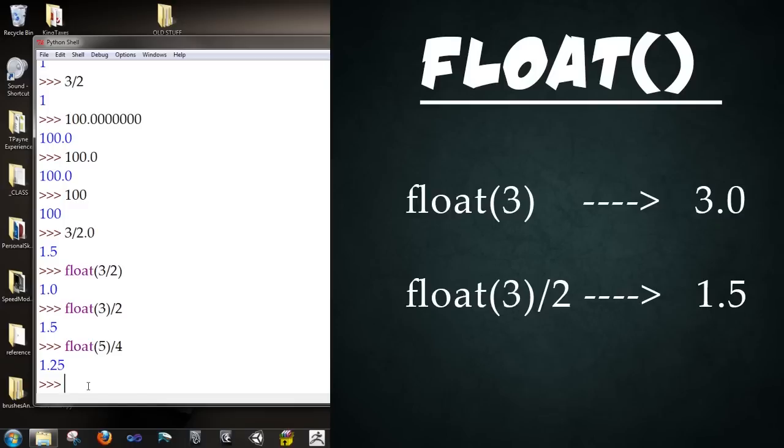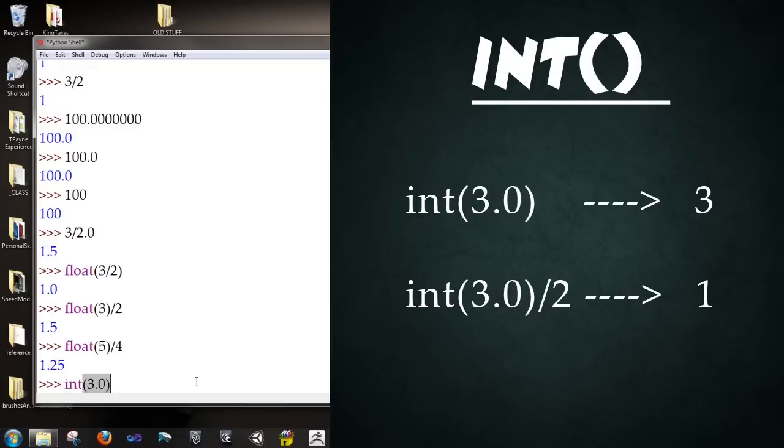The same can be done in the reverse. So we typed in float open close parentheses to convert an integer or some value into a floating point value. Okay? So we can also do the same of converting a float back to an integer value using int open close parentheses with 3.0 inside. Type that. And now, we have an integer value returned. So int open close parentheses. So this is how you solve for rounding errors.